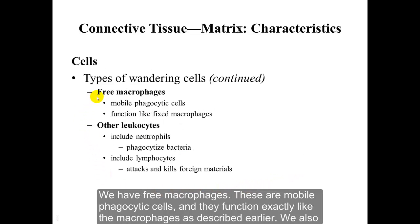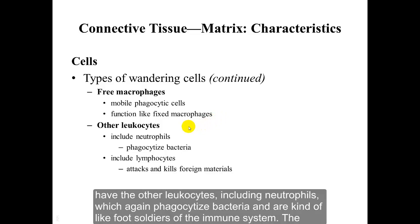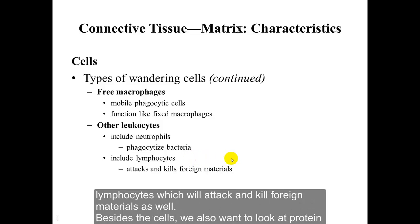We have free macrophages, which are mobile phagocytic cells that function exactly like the fixed macrophages described earlier. We also have other leukocytes, including neutrophils, which phagocytize bacteria and are the foot soldiers of the immune system, and lymphocytes, which attack and kill foreign materials as well.